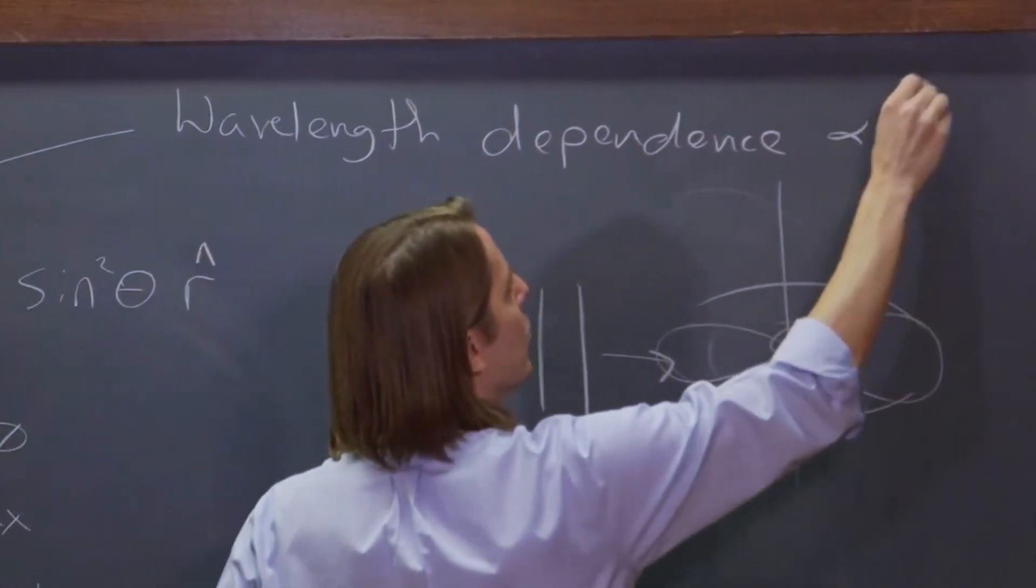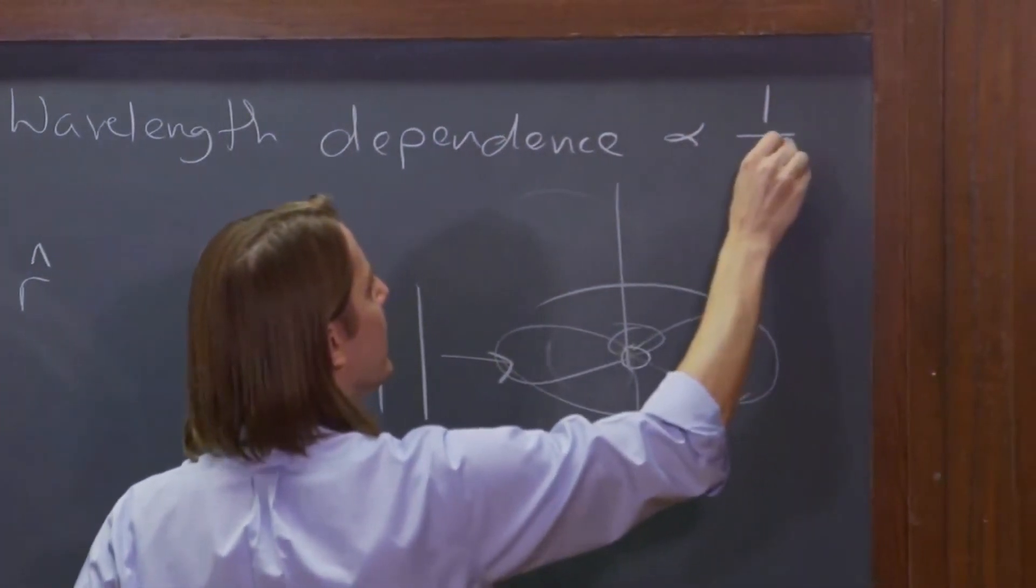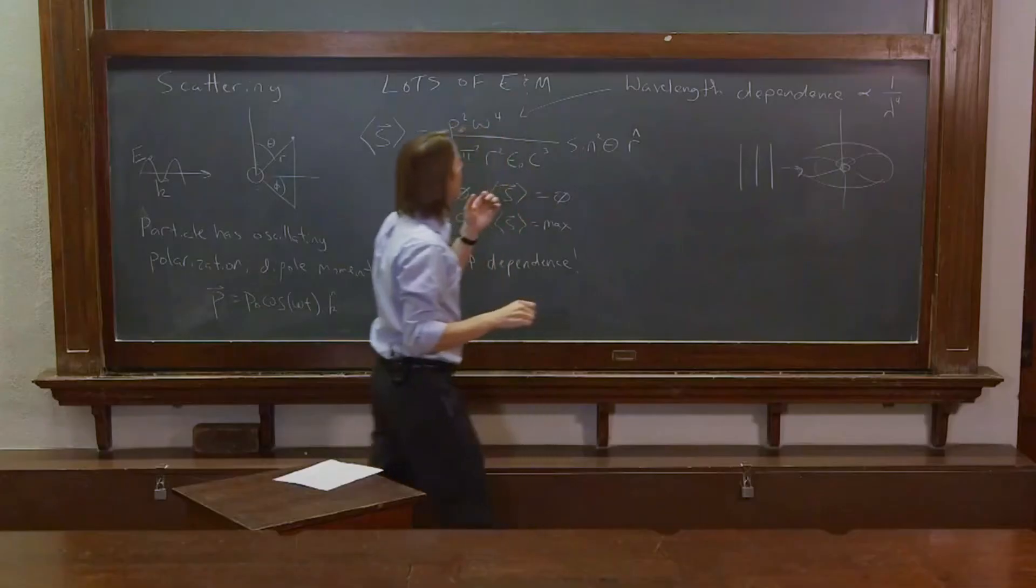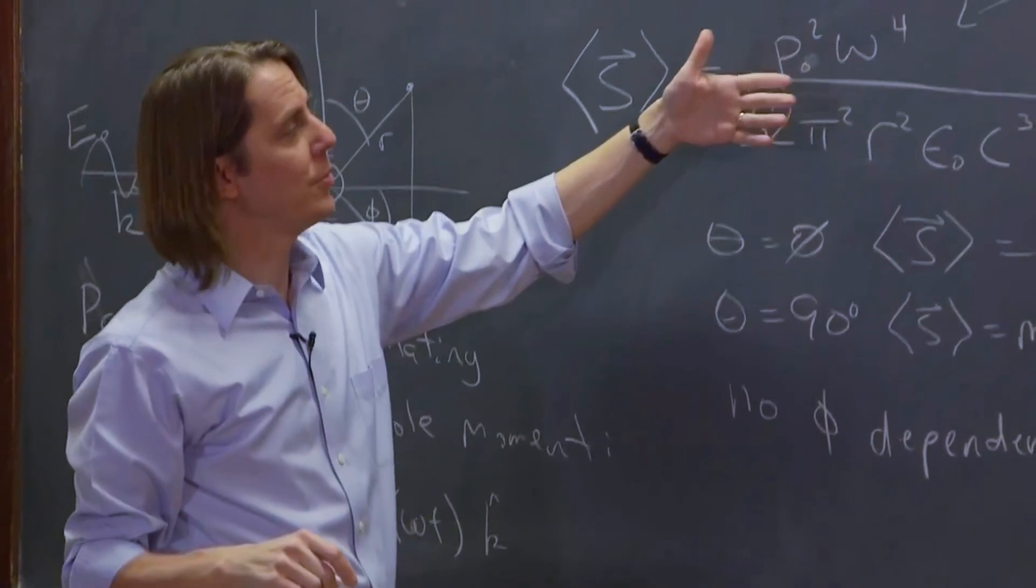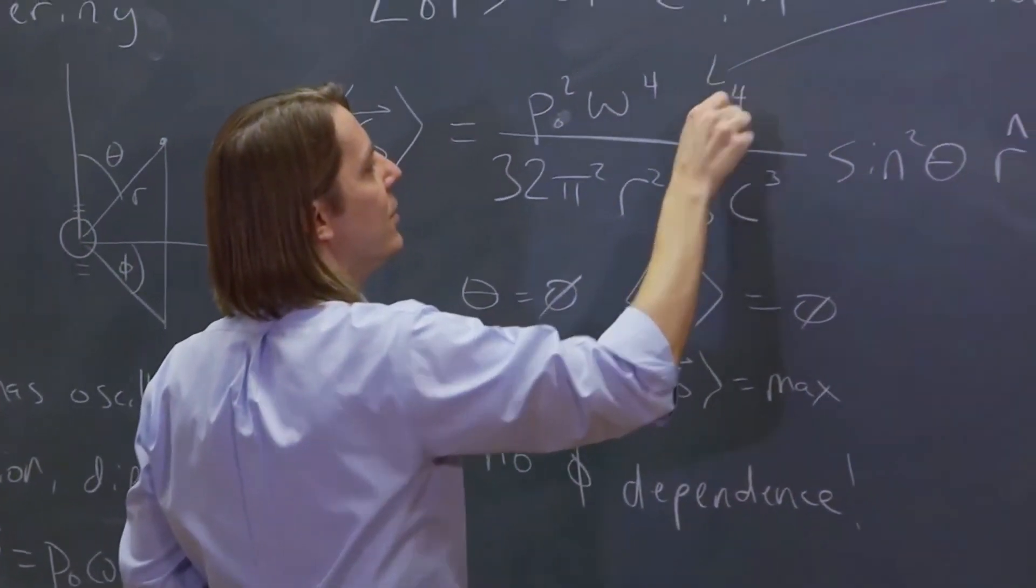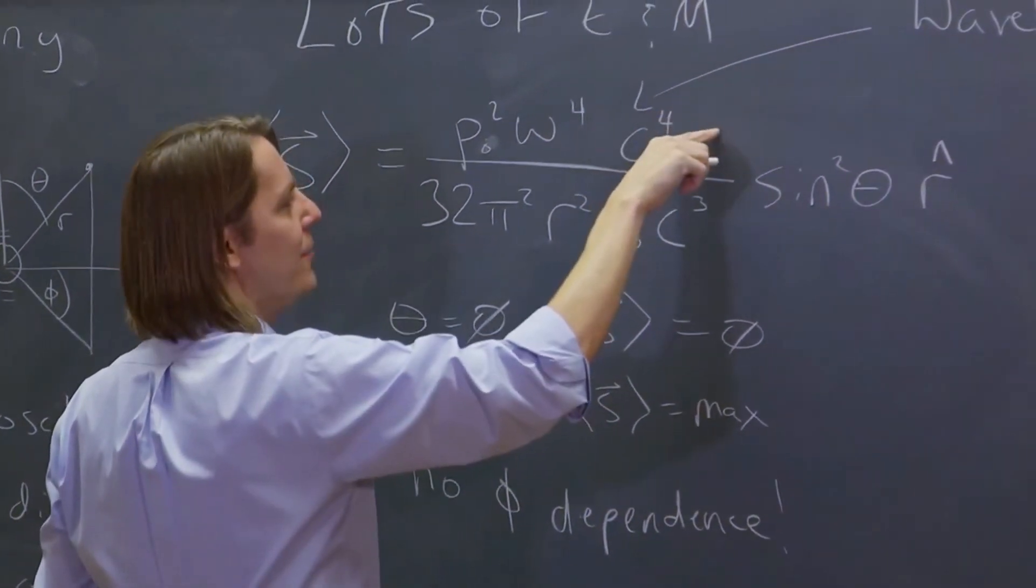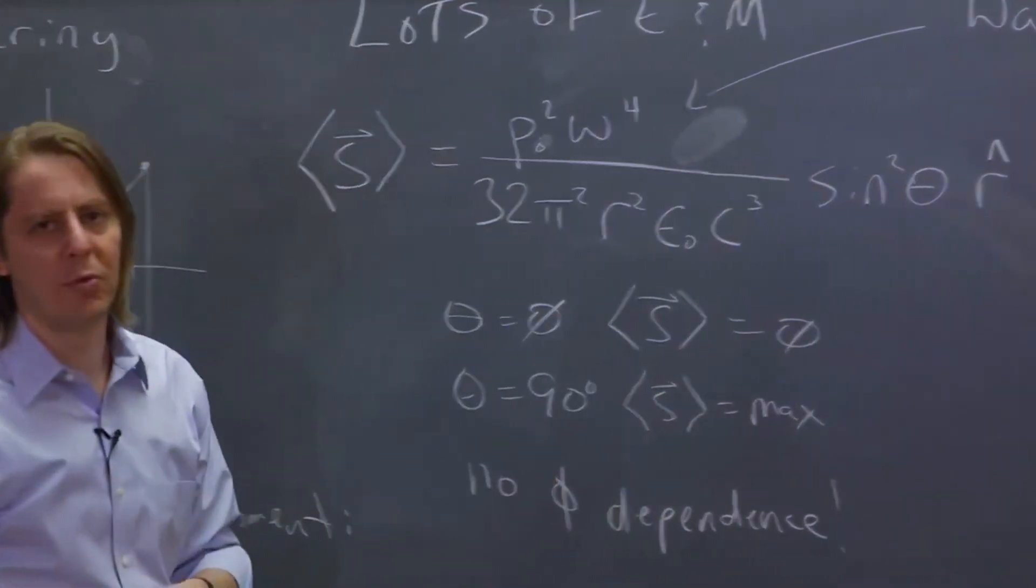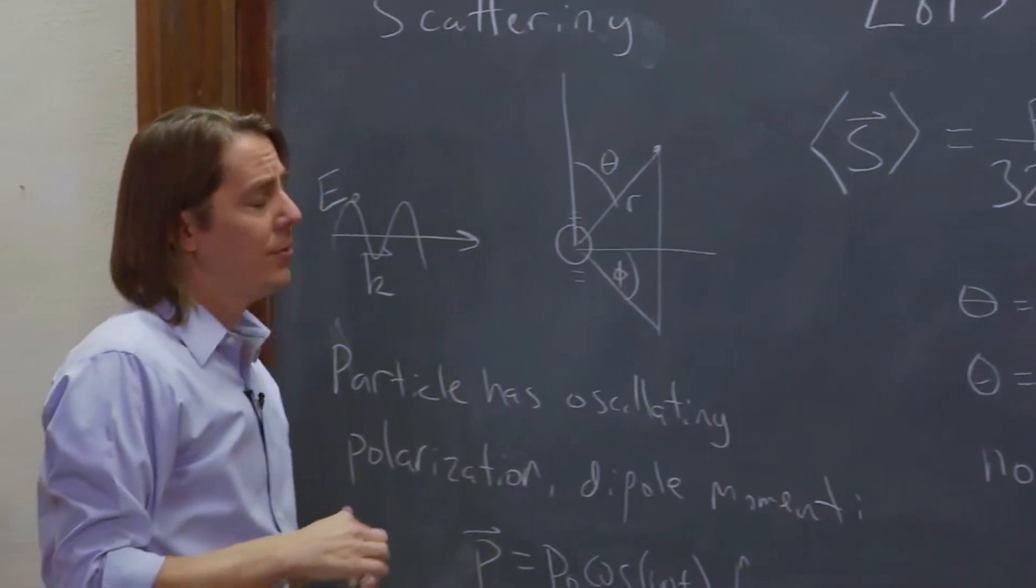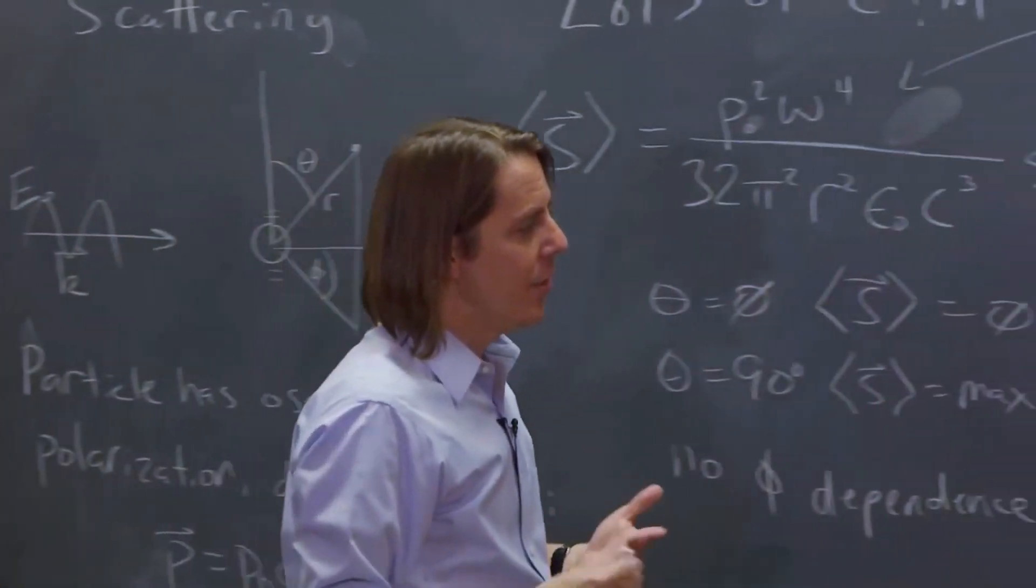You can also see the wavelength dependence is here. So it goes as one over the wavelength to the fourth, right? Because this is omega, and that's the temporal frequency. So we know we could write omega is ck, so we could call it c to the fourth times k to the fourth, but k is two pi over lambda. So we could write a bunch of stuff and get it to be one over lambda to the fourth.